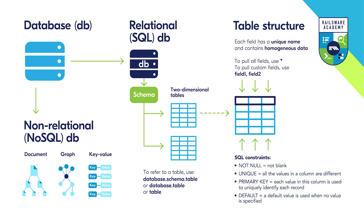We will also be using SQL constraints — rules enforced on data in your tables. Constraints are used to limit the type of data that can go into a table to ensure accuracy and reliability. Constraints can be column level or table level. The first commonly used constraint is NOT NULL, which means a column cannot have a null value. Null is a value in a field that appears to be blank — different from zero or a field containing spaces.